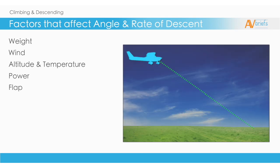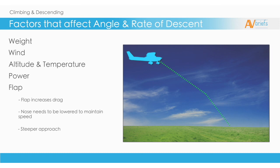Flap: flap increases drag. The nose needs to be lowered to maintain the same airspeed. Flaps create a steeper approach. All this can be better for normal approach and landing configurations. For a glide descent, they will always reduce glide distance if there is no added power.